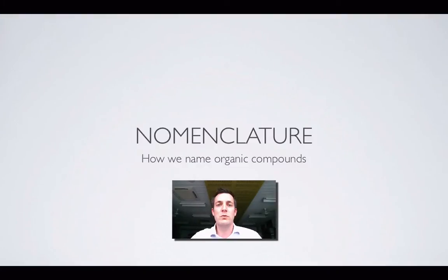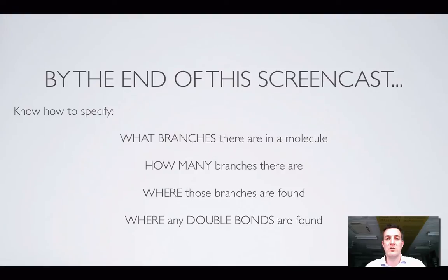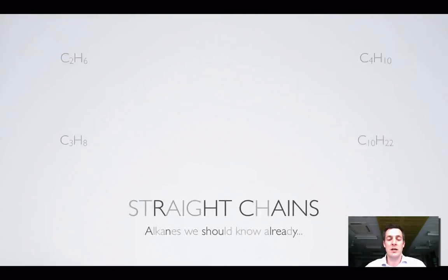Hello and welcome to this film which is all about nomenclature. This might sound completely new, but you know how to name ionic compounds and covalent compounds — nomenclature is just a system of naming. This film is about naming organic compounds. By the end, you'll know what branches there are in a molecule, based on the longest chain, how many branches there are and where they are, and if there are any double bonds, where they are.